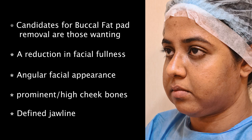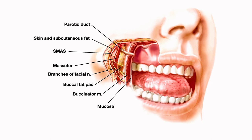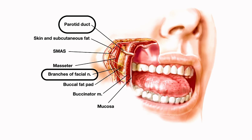The Bishat's fat pad is divided in four parts and has a complex relationship to the facial structures, namely the parotid duct, the facial nerve buccal branches, facial vein, and the buccinator muscles.